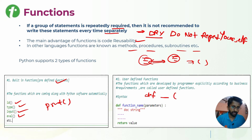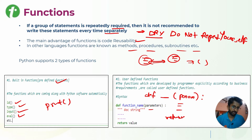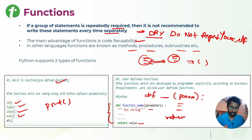The syntax for a user-defined function uses the def keyword, followed by the function name, then parameters, and then a colon. Inside, you can write a docstring explaining what the function does, followed by the lines of code, and then either a return statement or a print statement to output the value.